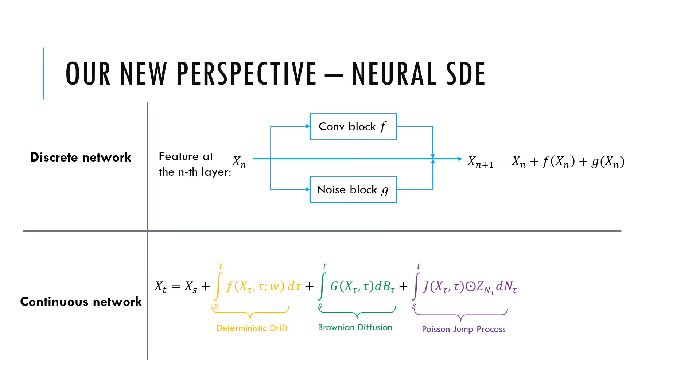To understand our neural SDE approach, let's first look at a typical residual block consisting of a convolutional block F, a shortcut, as well as a noise layer G. The noise block G could be induced by dropout, drop block, or any other source of randomness. So the output Xn+1 is a composition of previous hidden feature Xn, F(Xn) which is output of convolution block, and the output of noise block.